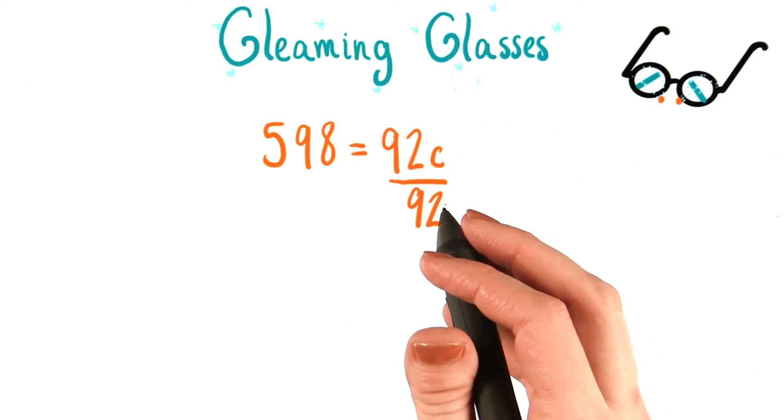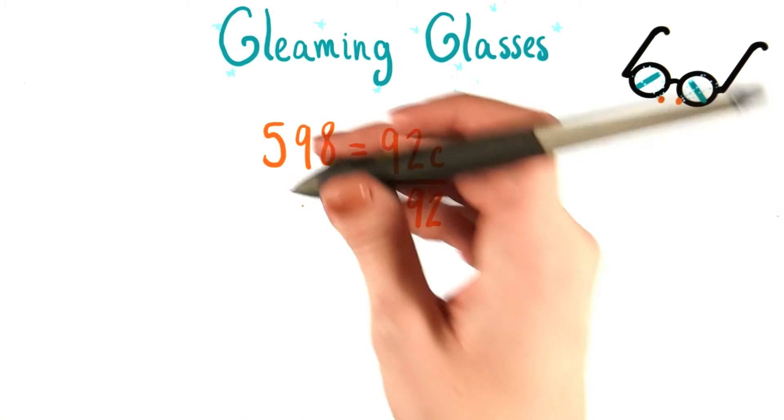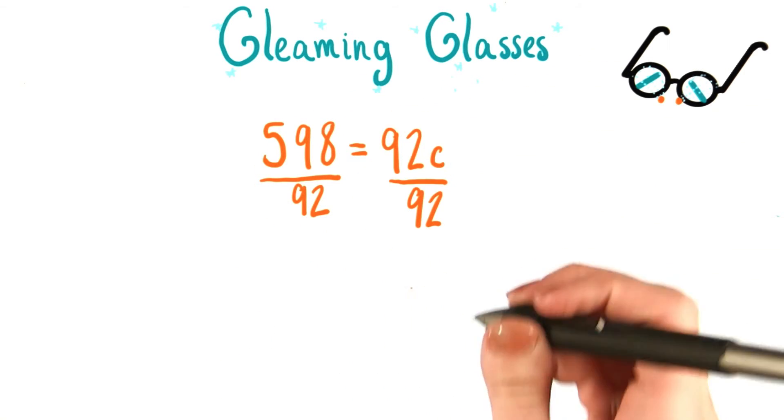But that also means, since I'm dividing on one side of the equation, that I also need to divide on the other side. So I also need to divide 598 by 92.